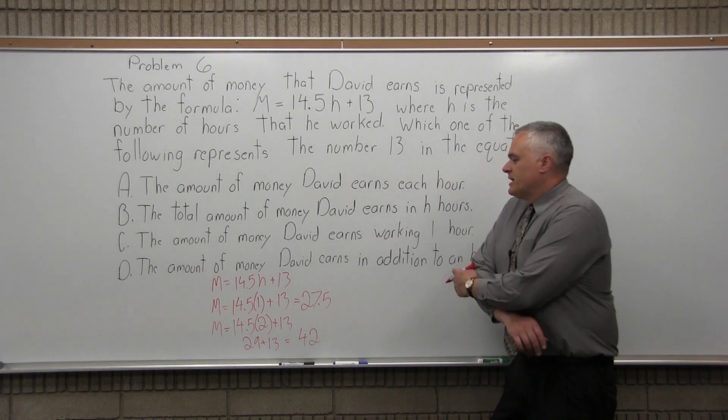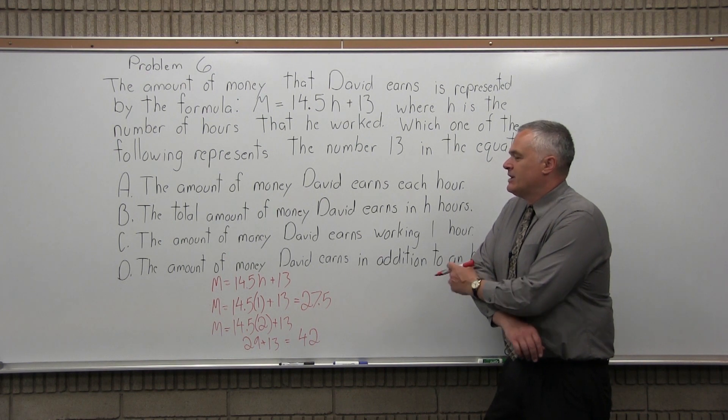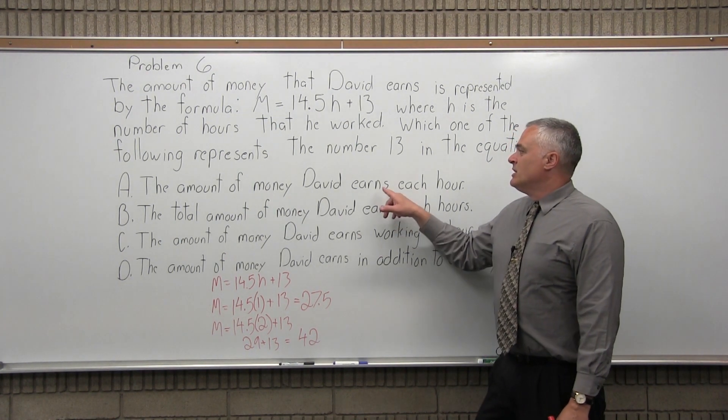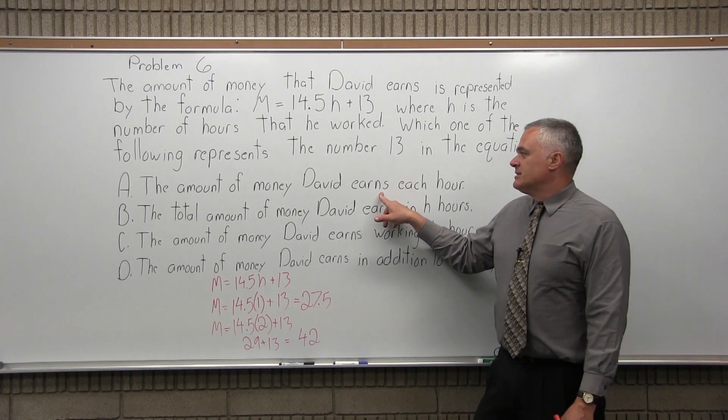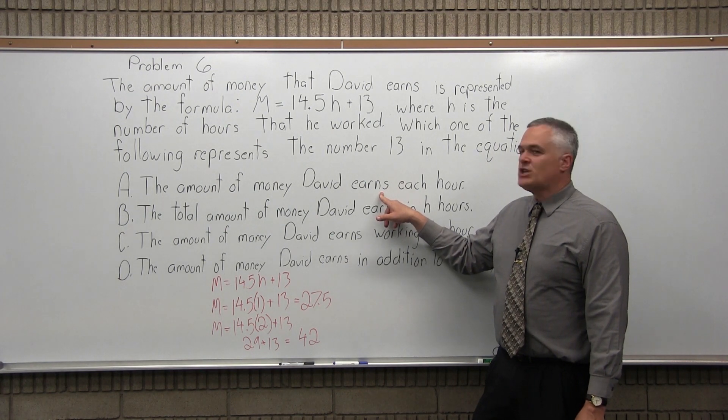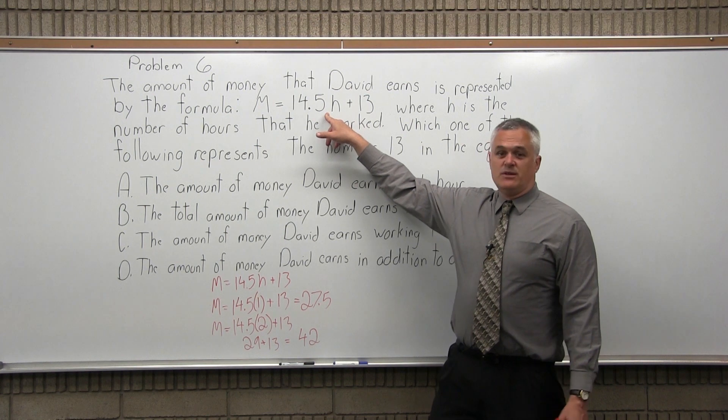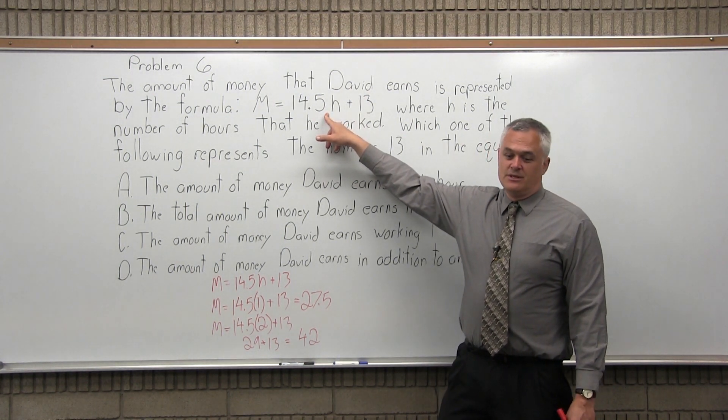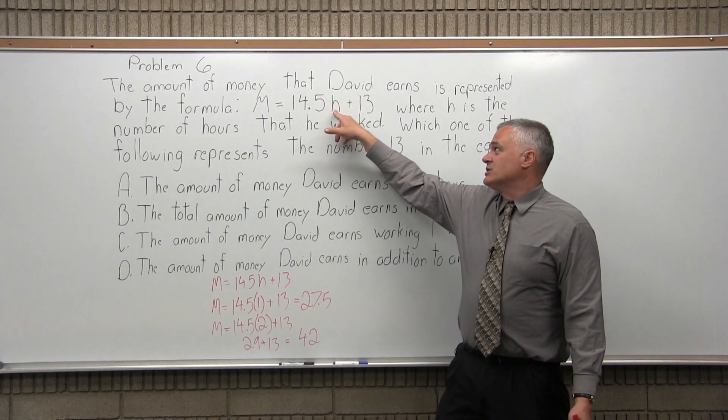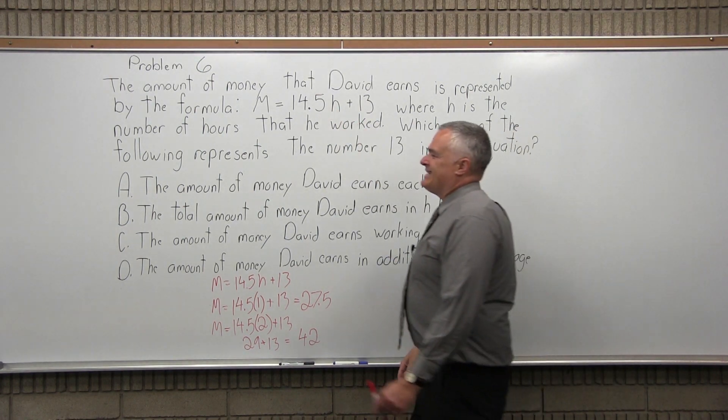You could do more, but you kind of see the pattern here, and you can start to eliminate stuff. So let's go back to our options. The amount of money that David earns each hour. Well, each hour, he's actually earning 14.5 dollars. That's how much he earns each hour. H is how many hours. It's not A.